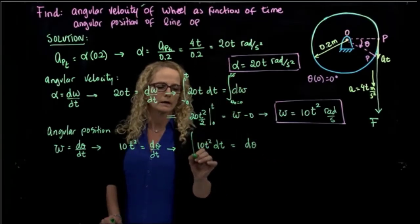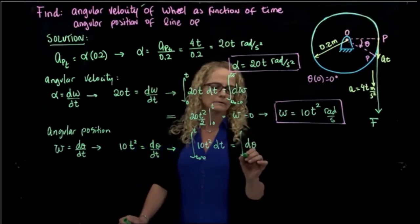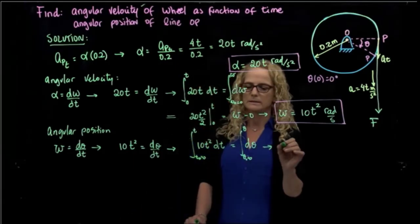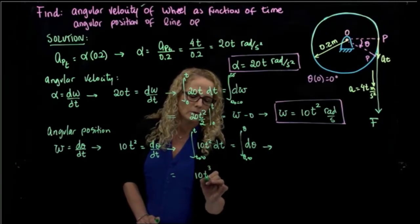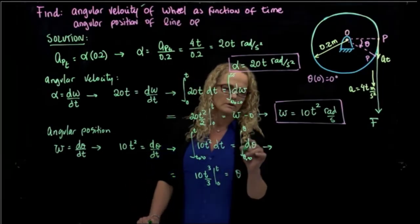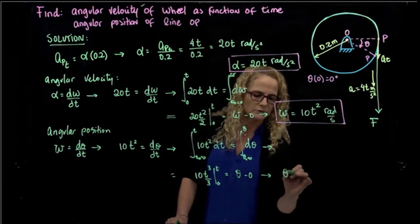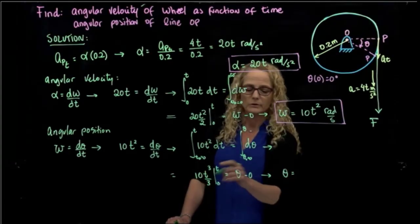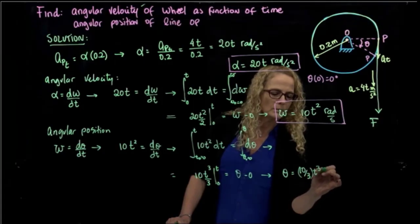Integrating both sides, the time integral goes from 0 to t, and the position integral goes from θ₀ = 0 to θ. This gives 10T cubed over 3, evaluated from 0 to t, which equals θ minus 0. Therefore, the angular position with respect to time is θ = (10/3)T³ radians.